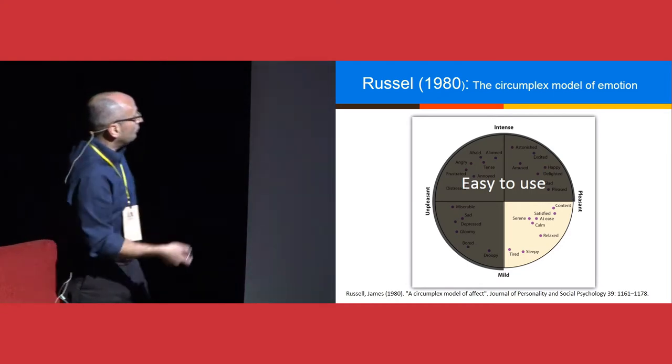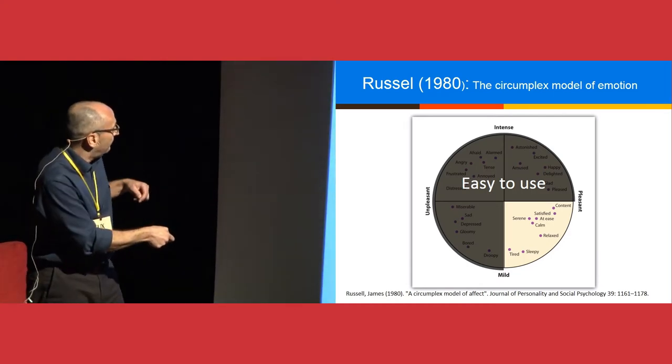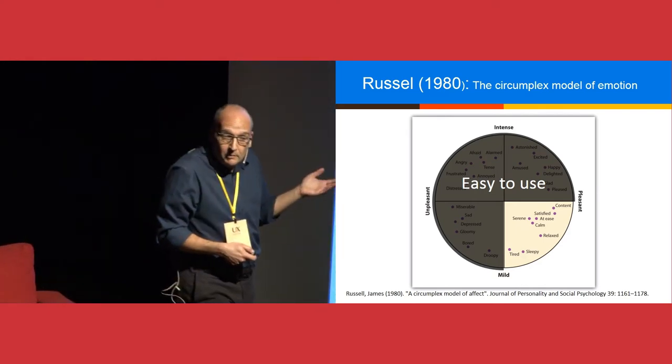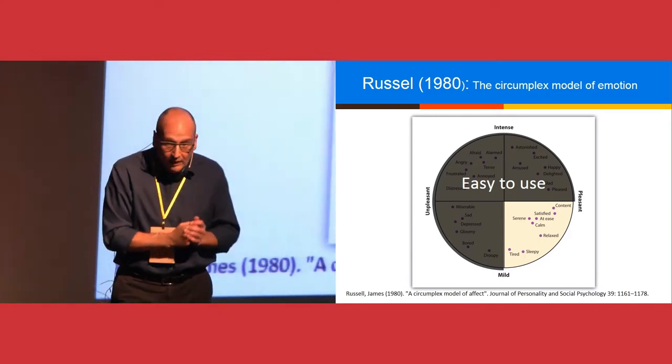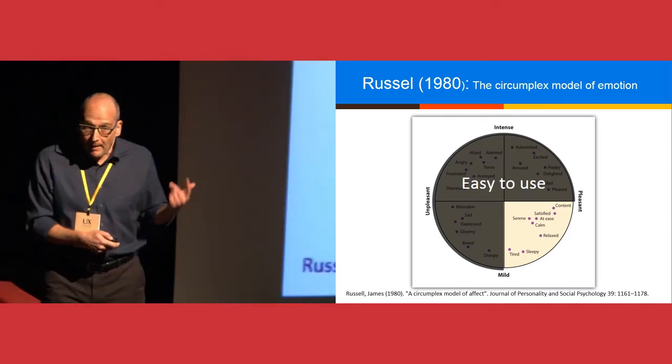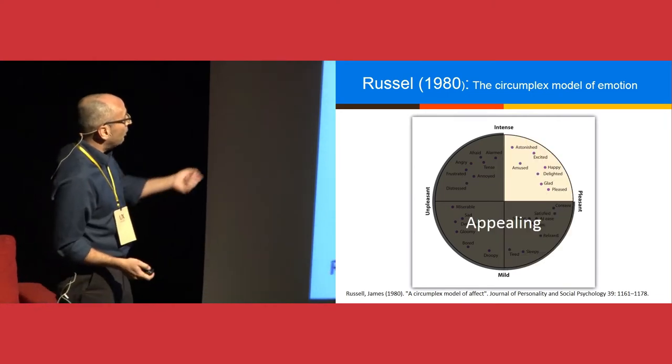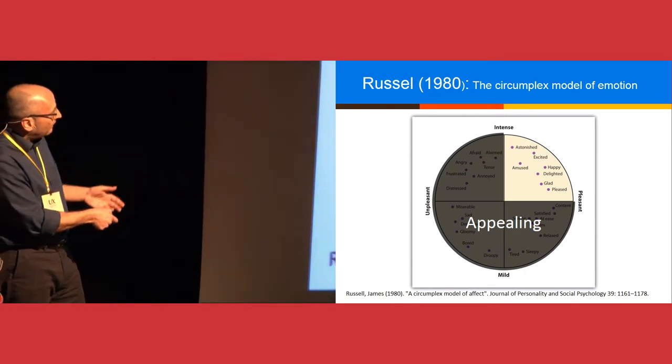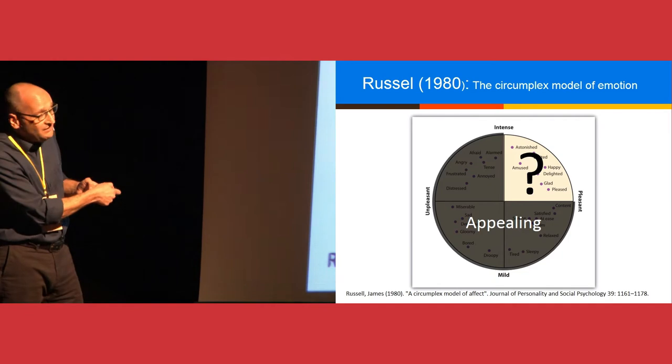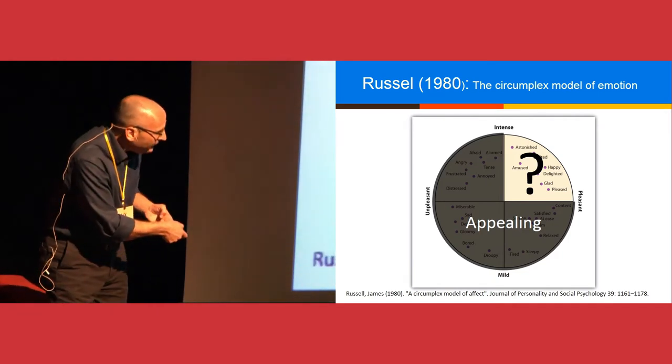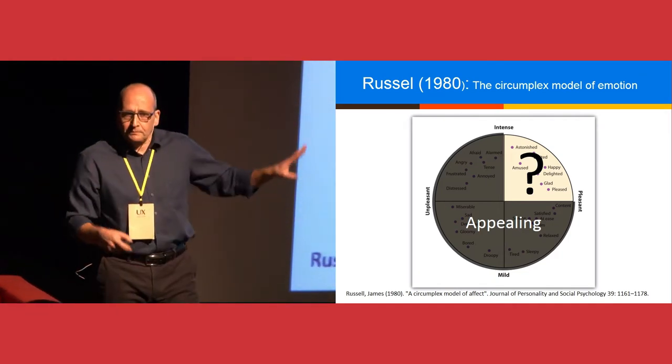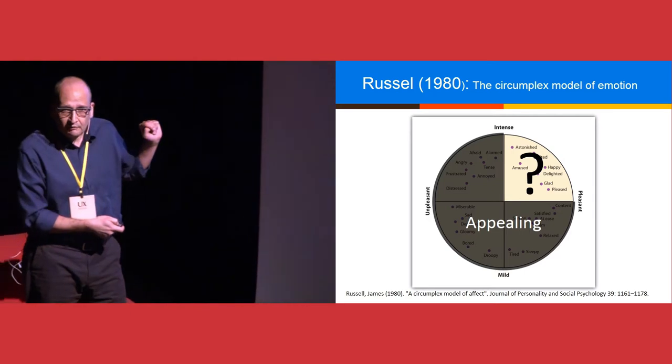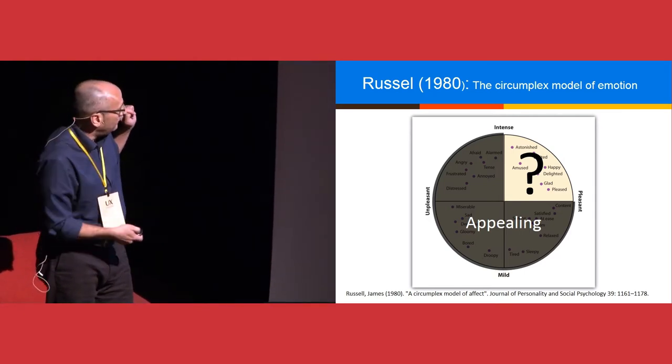You can map all emotions on two axes. One is intense compared to mild, and one is unpleasant compared to pleasant. In this circumplex that he called it, there are all of our emotions. We don't want to be as UX designers on the unpleasant side. However, let's look at the other two quarters.